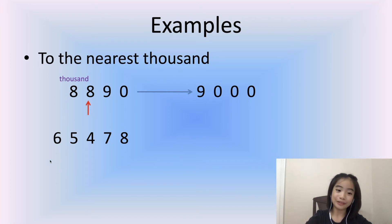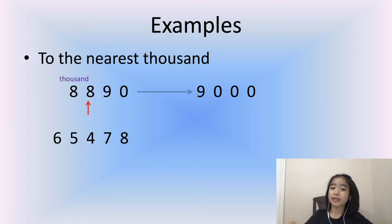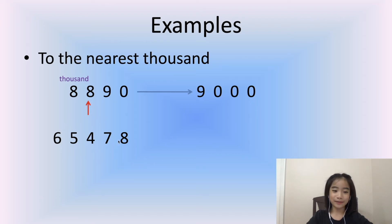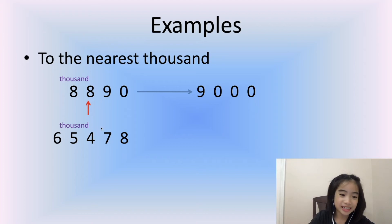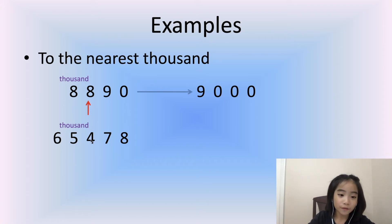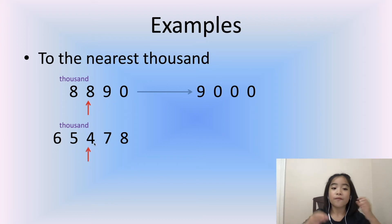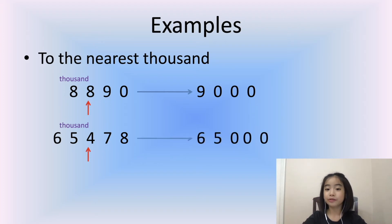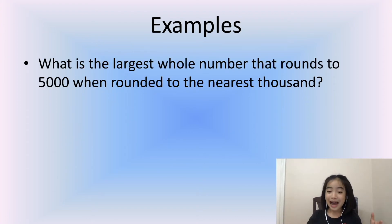Now let's look at a bigger number — but don't be afraid, it uses the same rounding rule. We have 65,478. The 5 is in the thousands position, and the digit to the right — in the hundreds position — is 4. Since 4 is less than 5, we round down to 65,000.